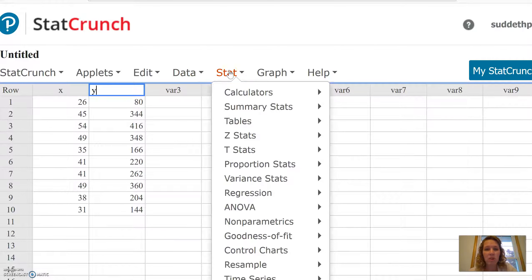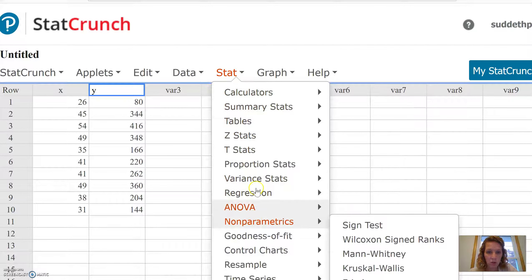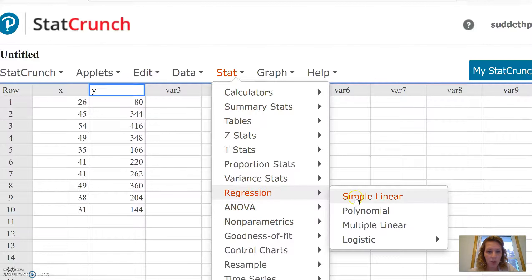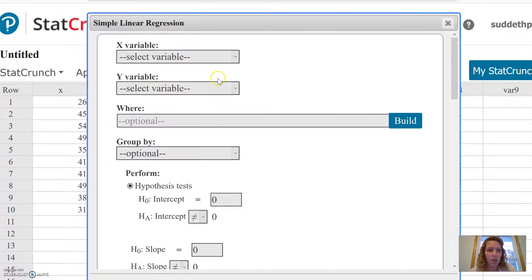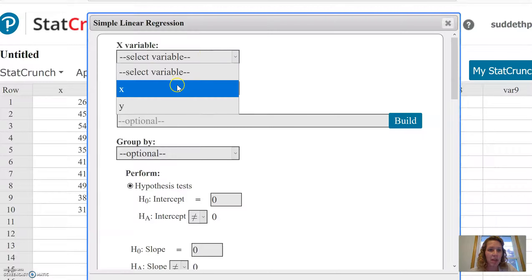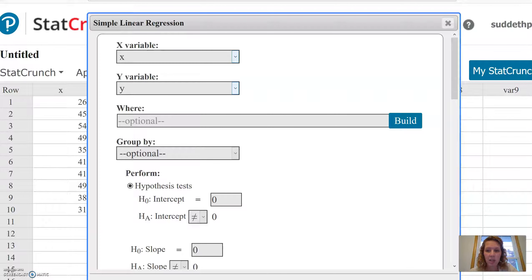Next, to perform the linear regression, we go to Stat, then Regression, and we're going to perform simple linear regression. I'm going to choose the X variable X, the Y variable is going to be Y, leave everything the same, and hit compute.